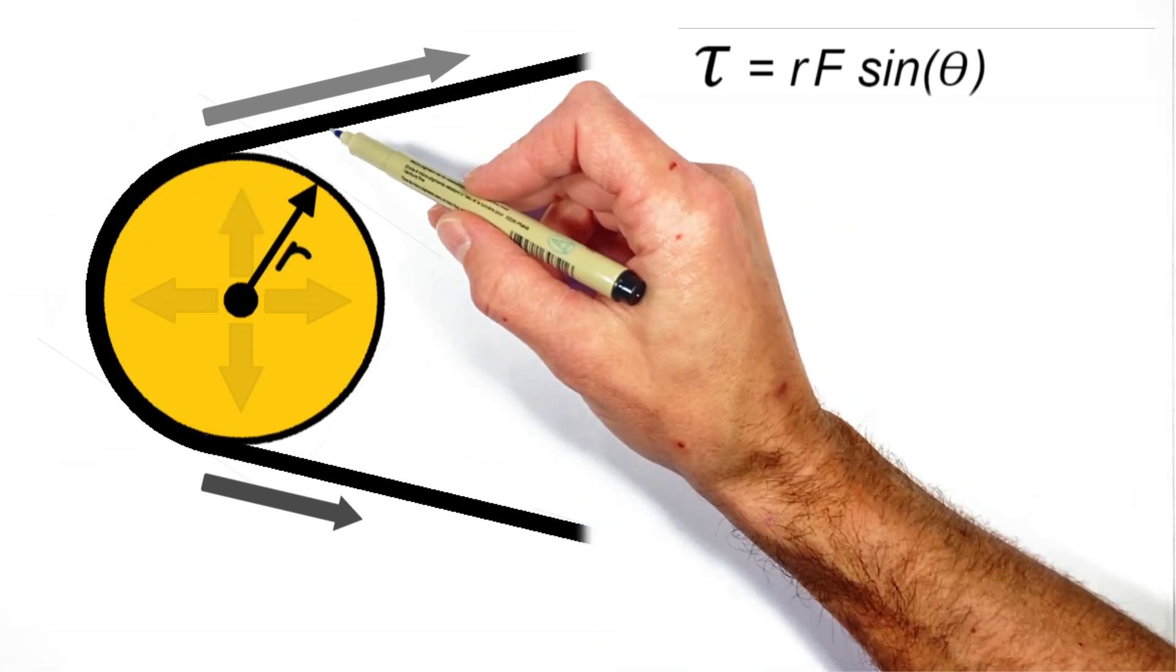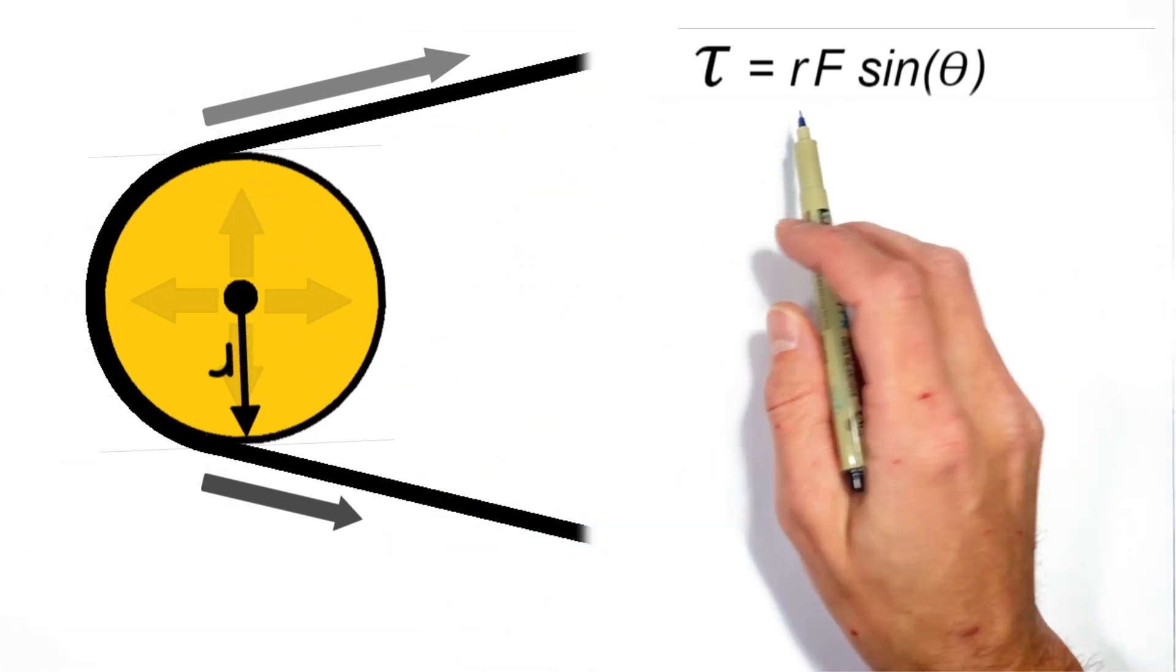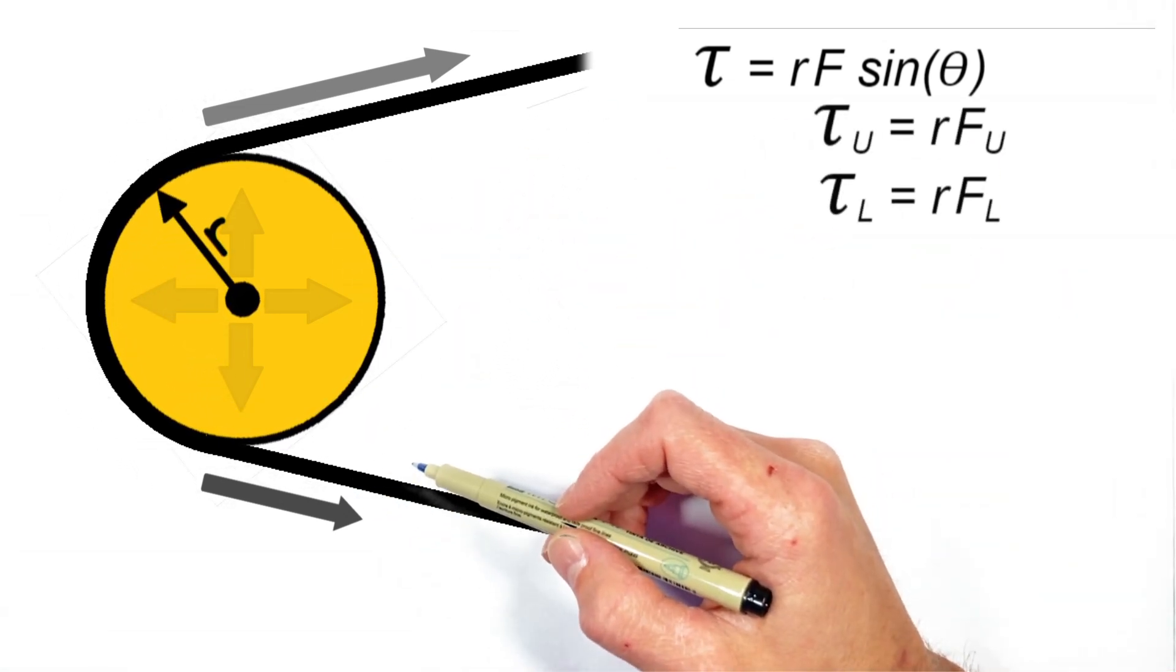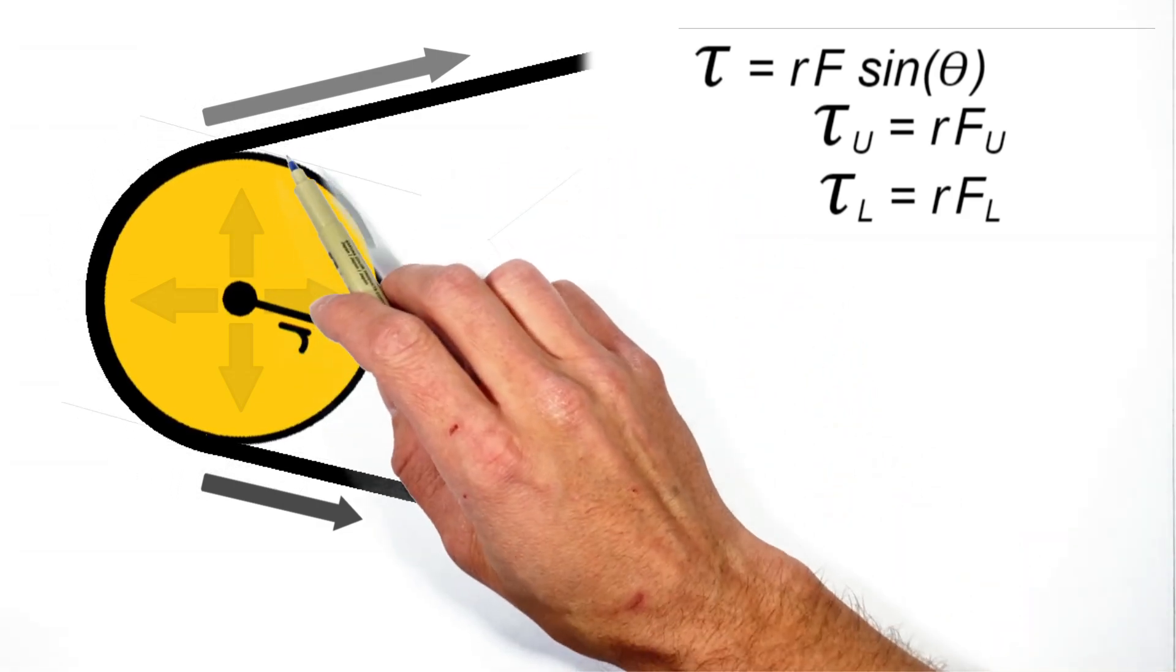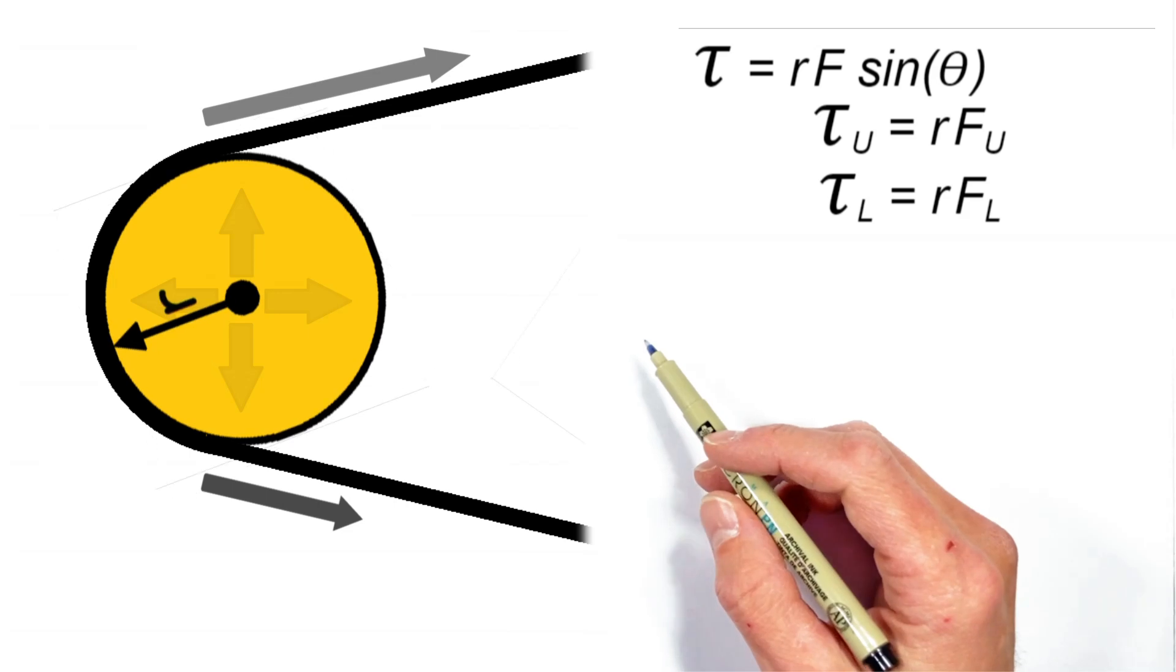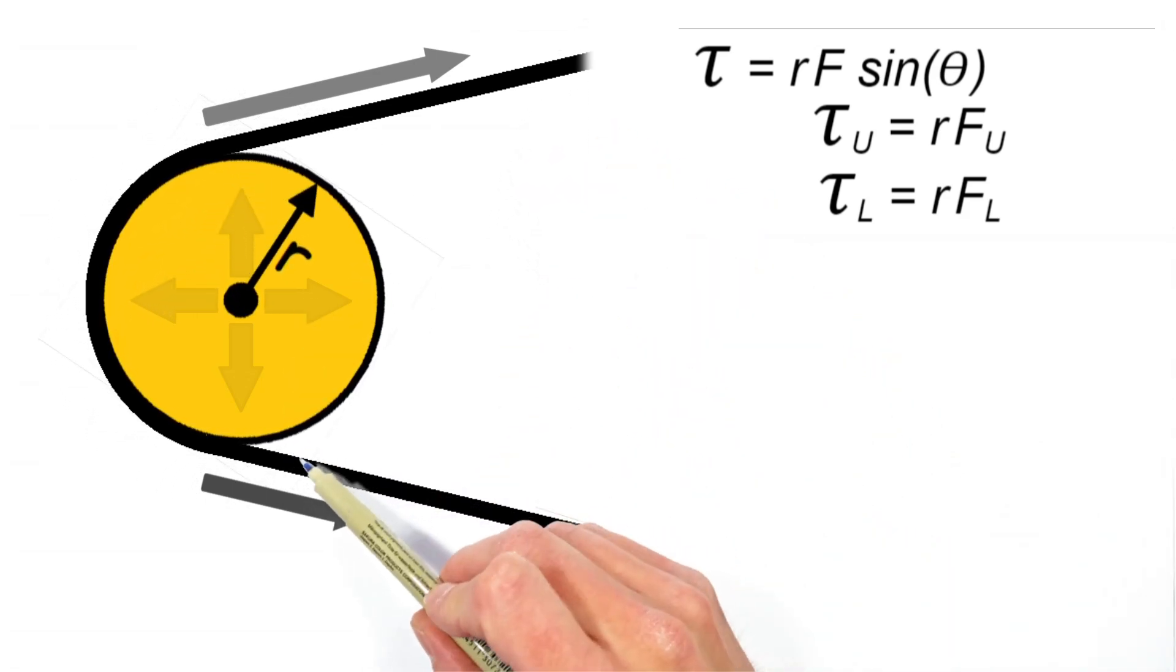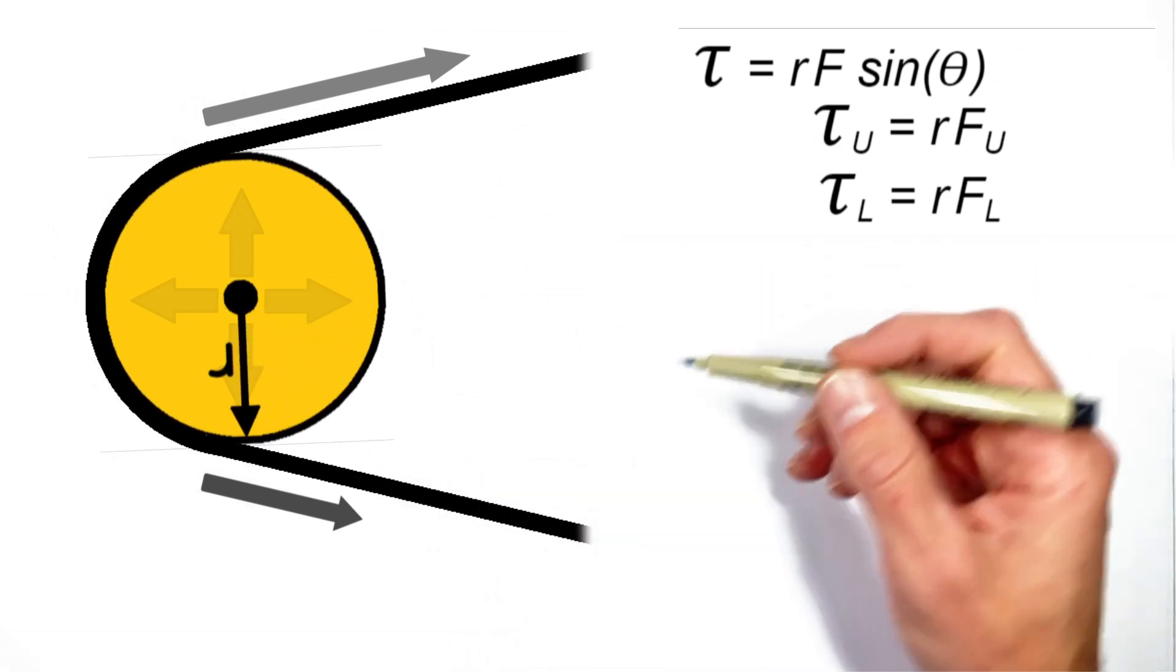Now, because the belt is acting at two different points on our pulley, what we need to do is apply this torque equation at both of these points. You see, this upper strand of the belt is acting at some radius r and pulling with some force. I'm just going to say that's the force by the upper strand of the belt. And down here we have this lower strand, again acting at the same radius r, but with some different force. I'm going to just say that's the force by the lower strand of the belt.